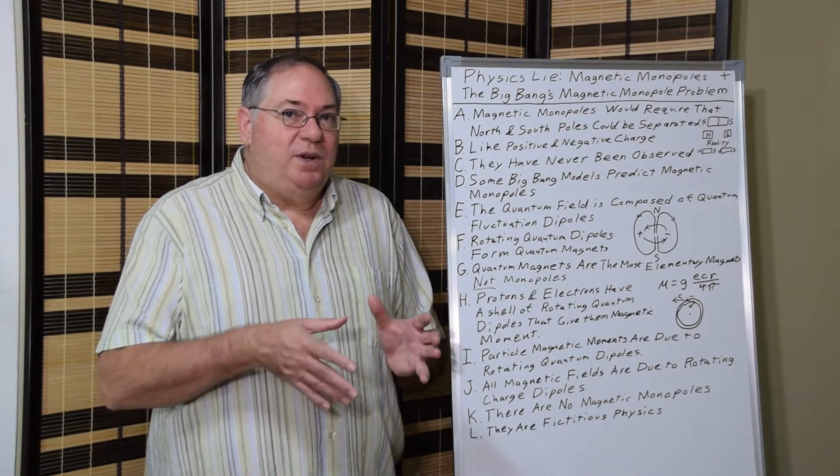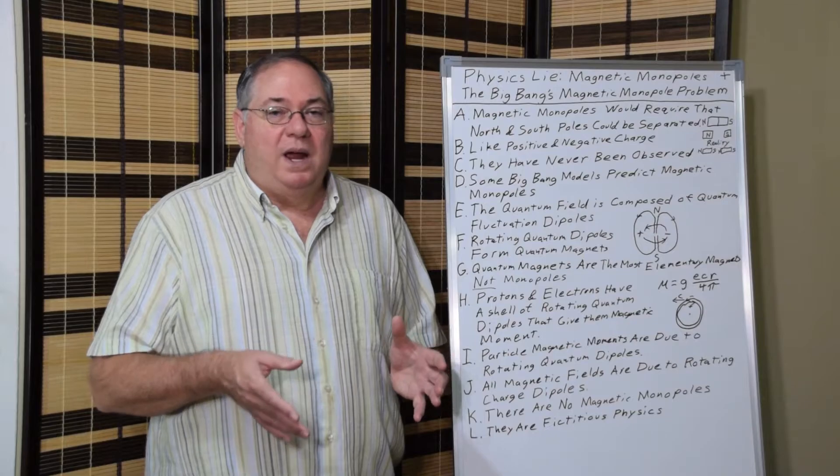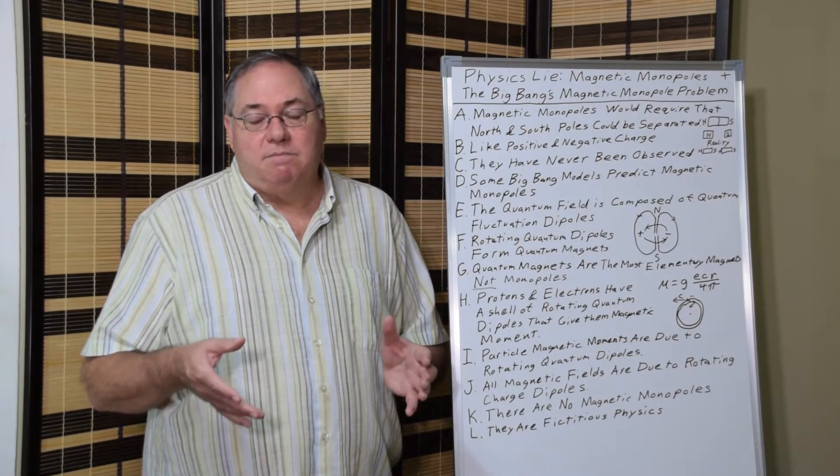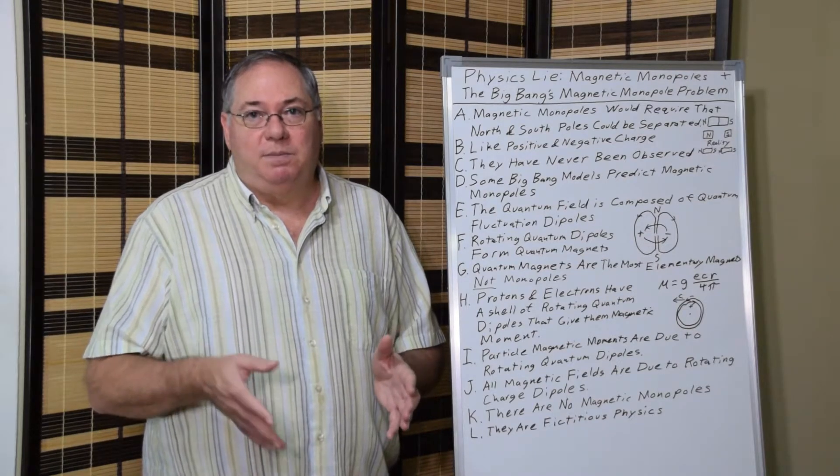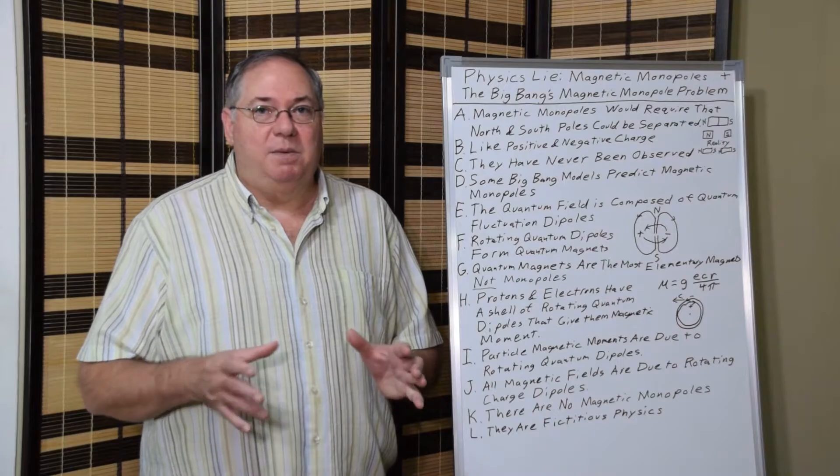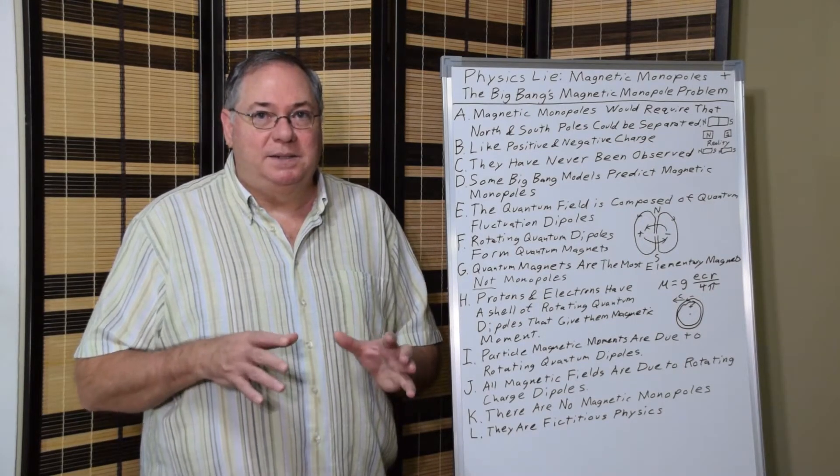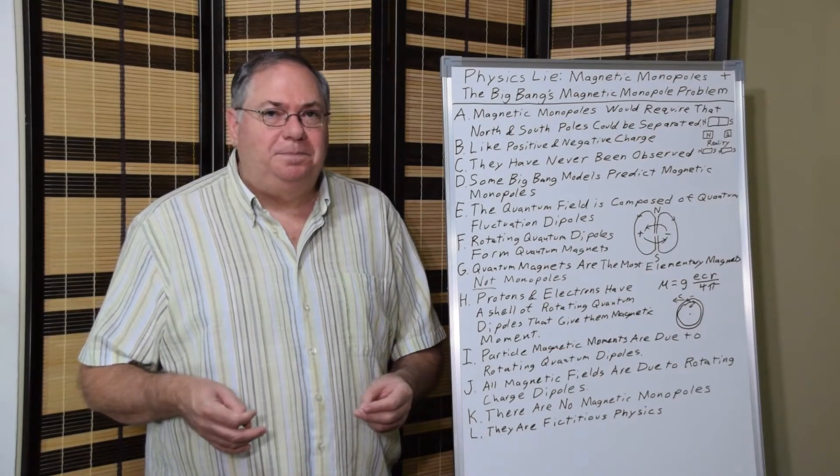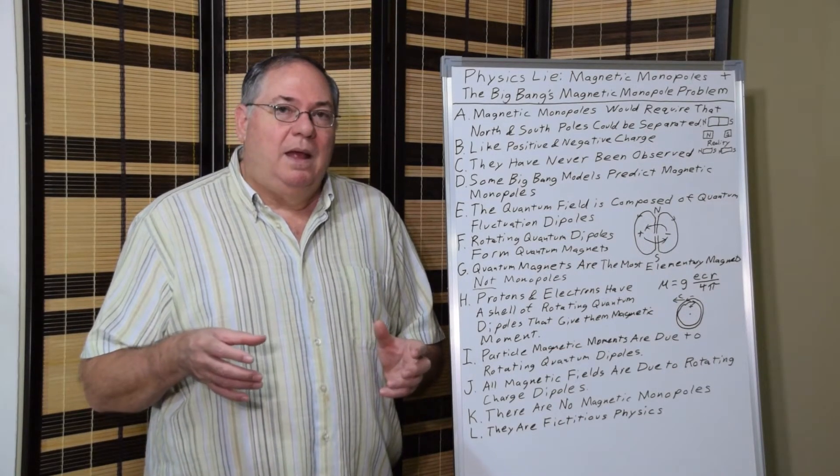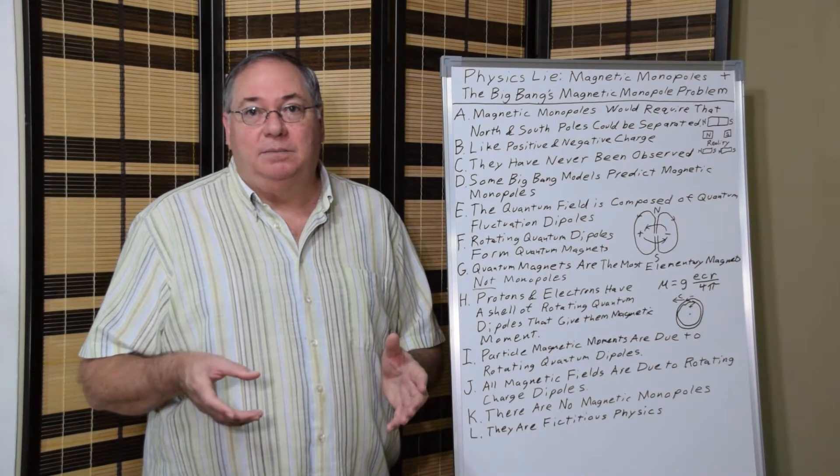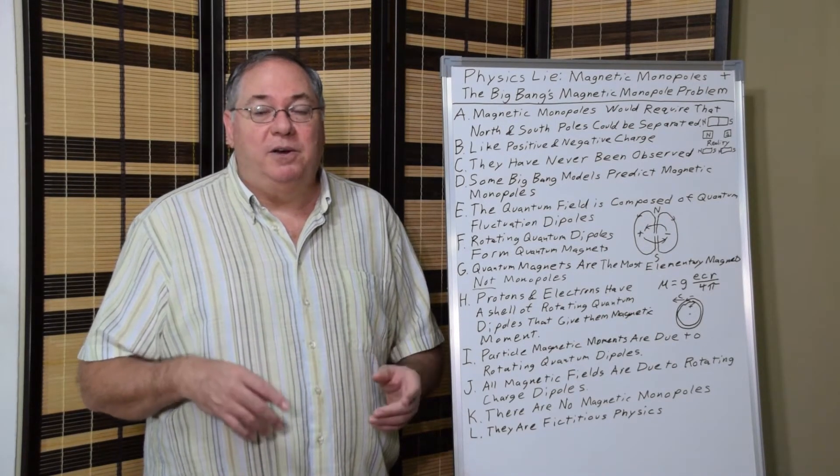So we have this really simple way to understand the magnetic moment from the basic particles of electron and proton, and the neutron's similar, slightly more complicated, because it has both a positive and negative charge to make it neutral. But we can understand it based on dipoles and dipole interactions.